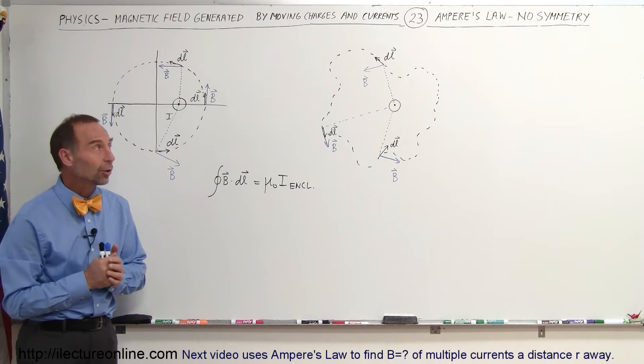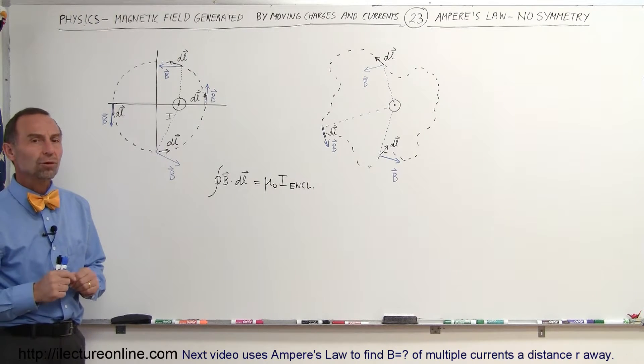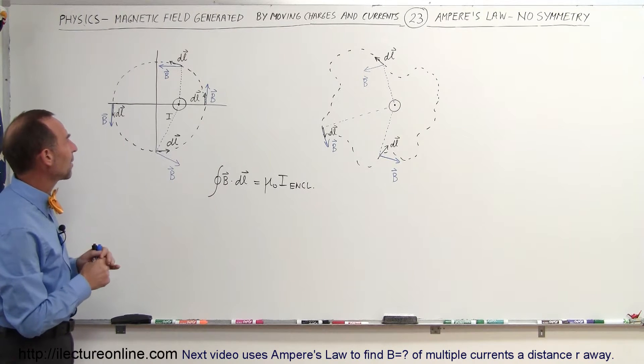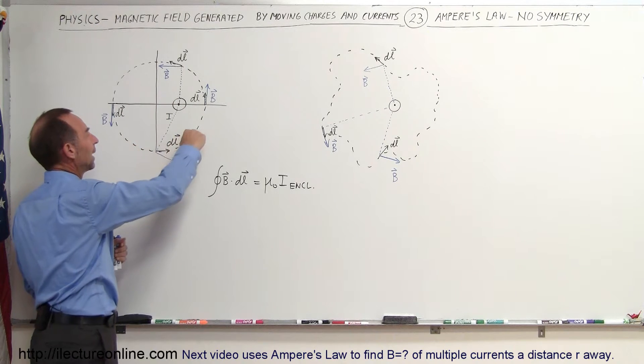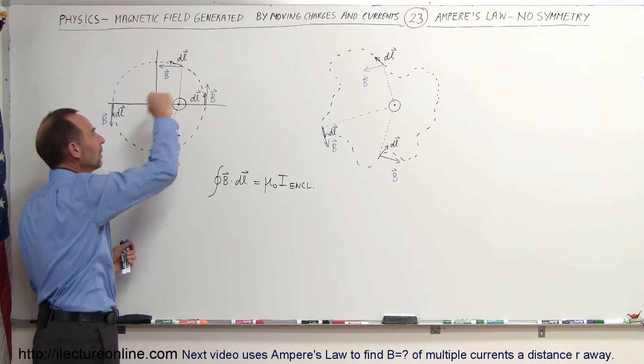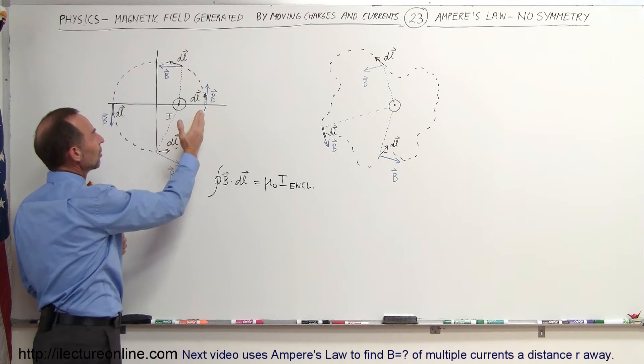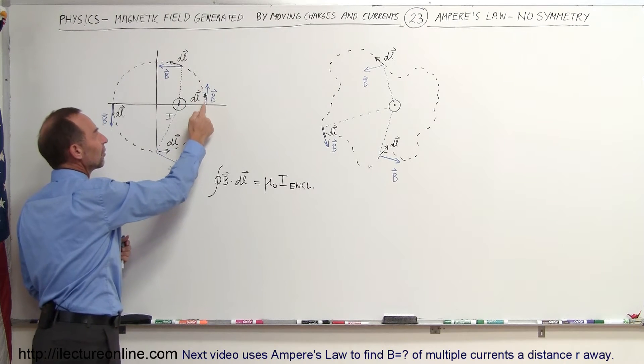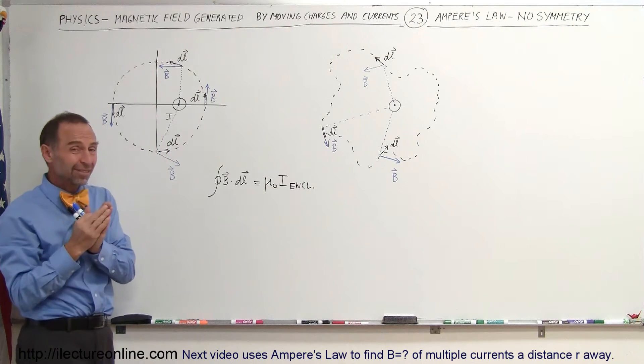Welcome to Electron Line. Now let's take a look at Ampere's law without any symmetry. In our first example here, instead of having the current at the very center of the circle, the path that we're going to integrate around is offset. If we do that, you can see that the direction of the magnetic field and the direction of the path, a small line segment on the path, is not always in the same direction.